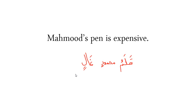Now, the word 'expensive' is an exception — it's not in the state of jar, but it has a kasra. It's really in the state of raf'ah because it's the khabar. You can't put 'al' on it because, as we learned in lesson one, the mubtada is usually ma'rifah (definite) and the khabar is nakira (indefinite). For example: Qalamun Mahmoodin kabirun — Mahmood's pen is big.